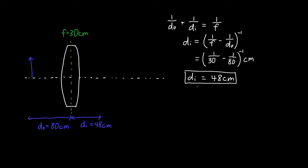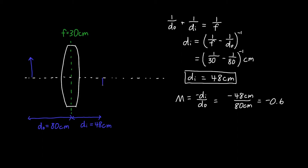Since we know DI, we can also calculate the magnification. The magnification for a single lens is minus DI over DO, which is minus 48 centimeters over 80 centimeters, equal to minus 0.6. Because it has a negative sign, the image should be inverted, and because the magnitude is 0.6 it'll be slightly more than half of our object height. Because DI is greater than zero, that means this image is real — rays genuinely converge on this side of the lens.